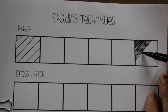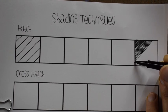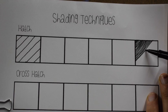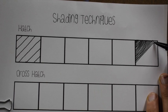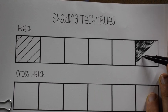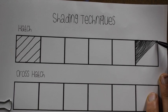So make your marks really tight close together, which is what I'm doing there on the hatch. So it's a really tight angled straight line. Hatching is great for shading.